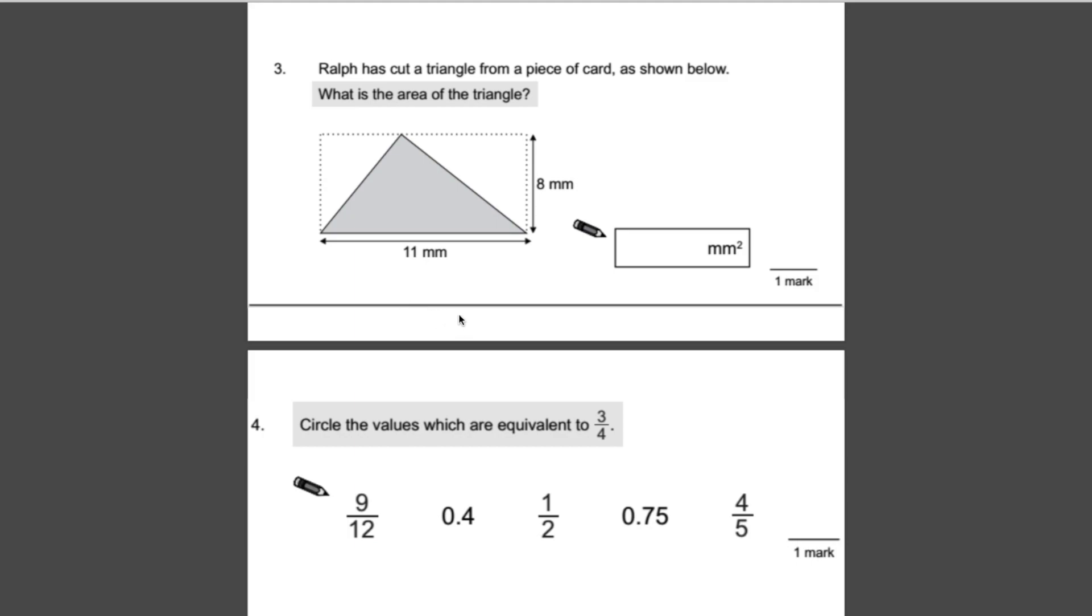Number 3 is area of a triangle. For this you need to know the formula: area of a triangle is base times height divided by 2. We have the base, 11 millimeters, and the height of 8. So we do that first: 11 times 8 is 88. Then we divide that by 2. So 88 divided by 2 is 44 millimeters squared.